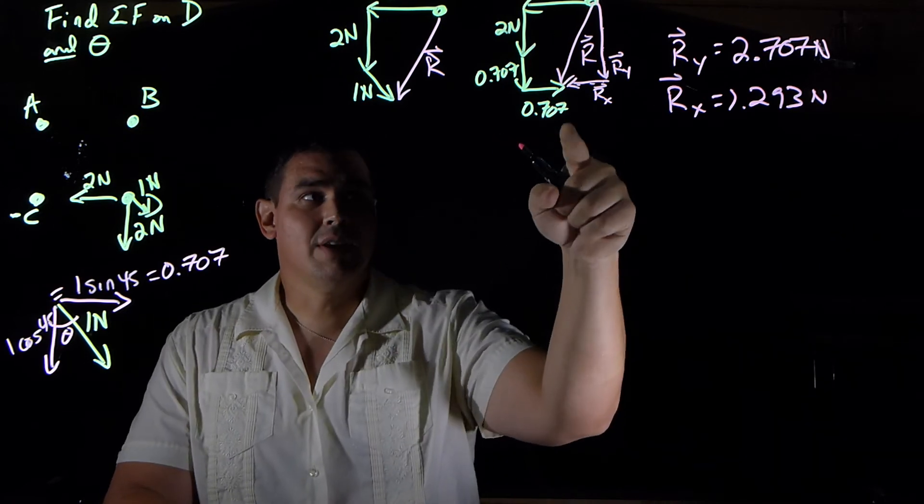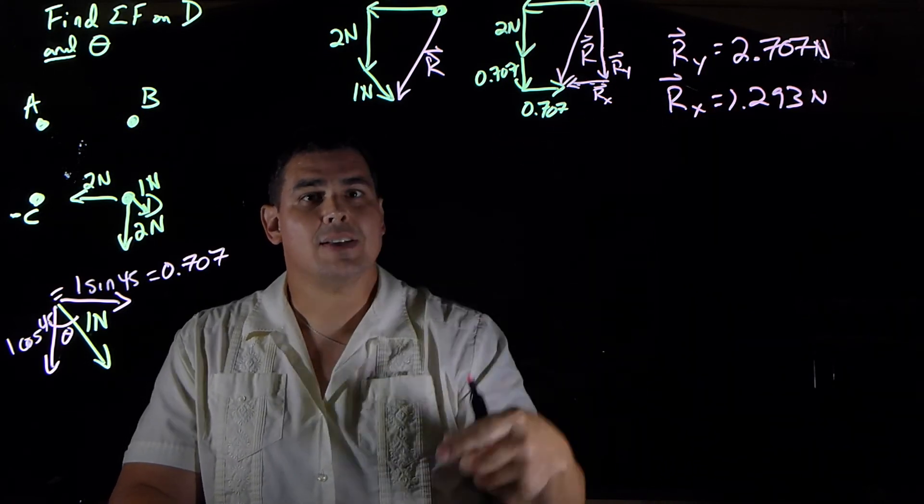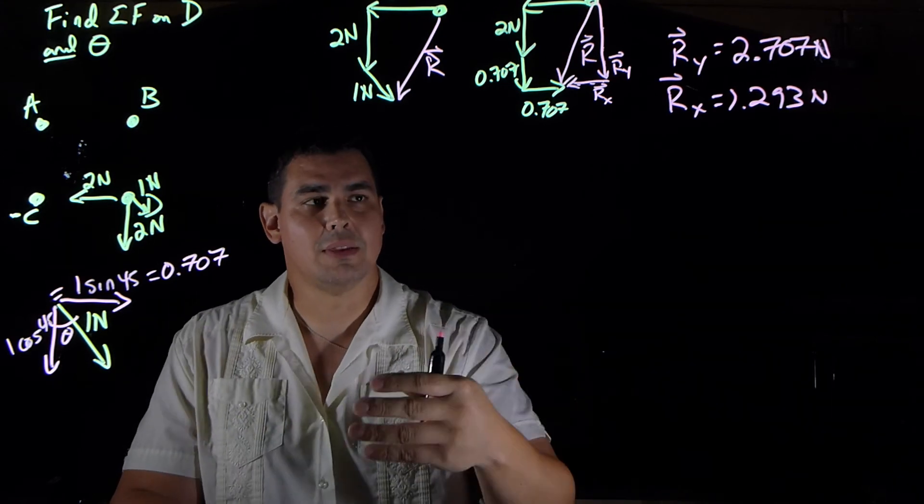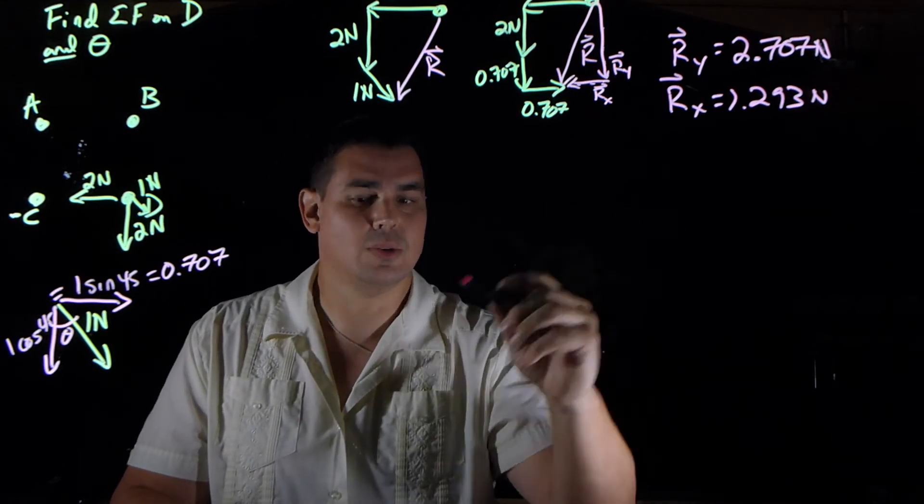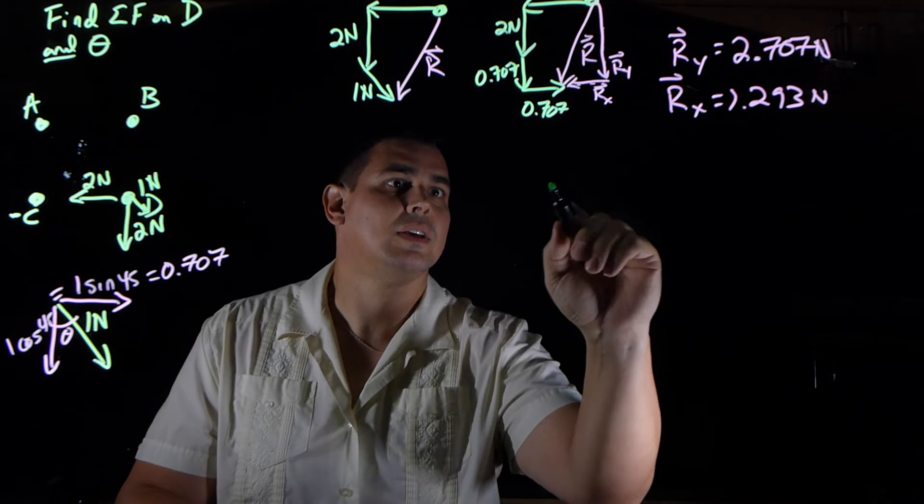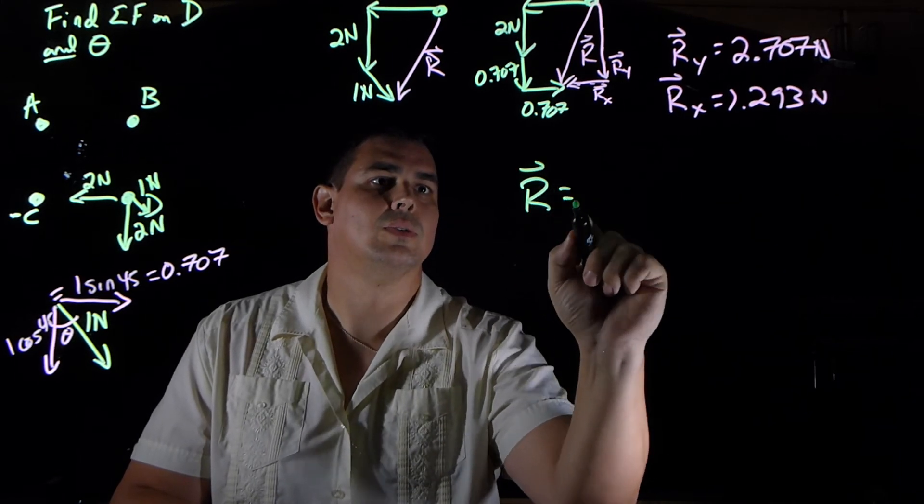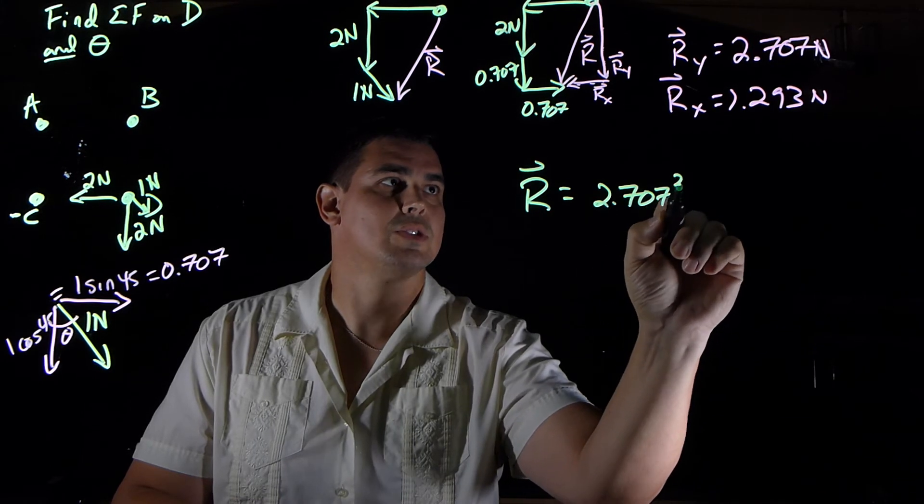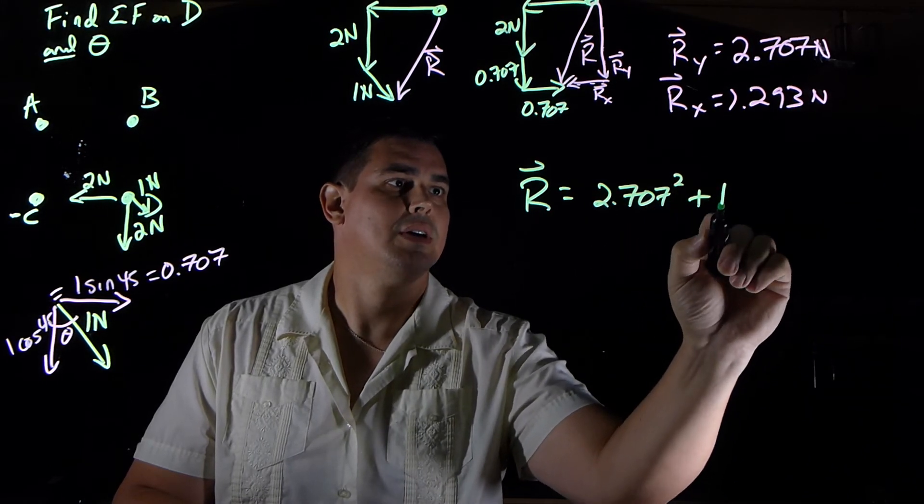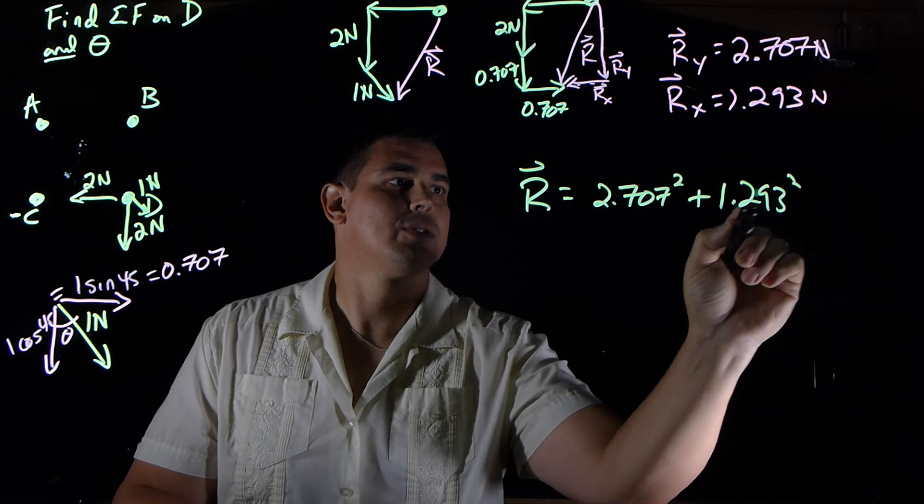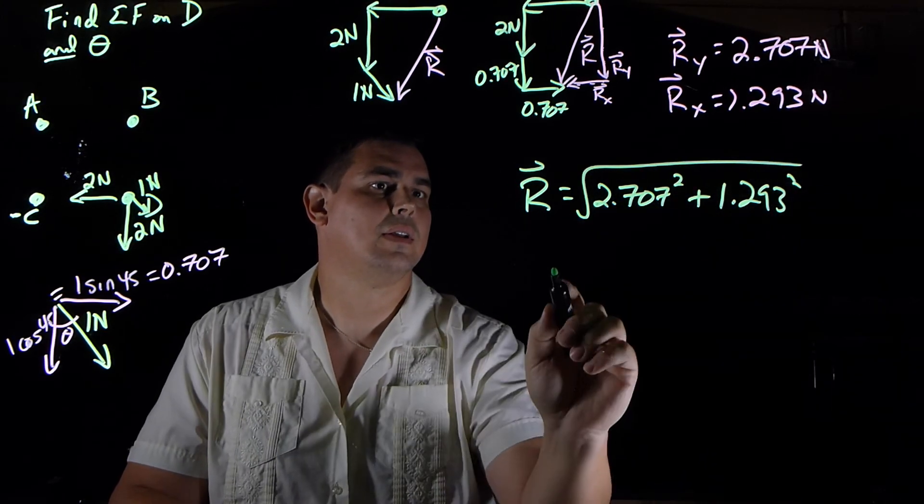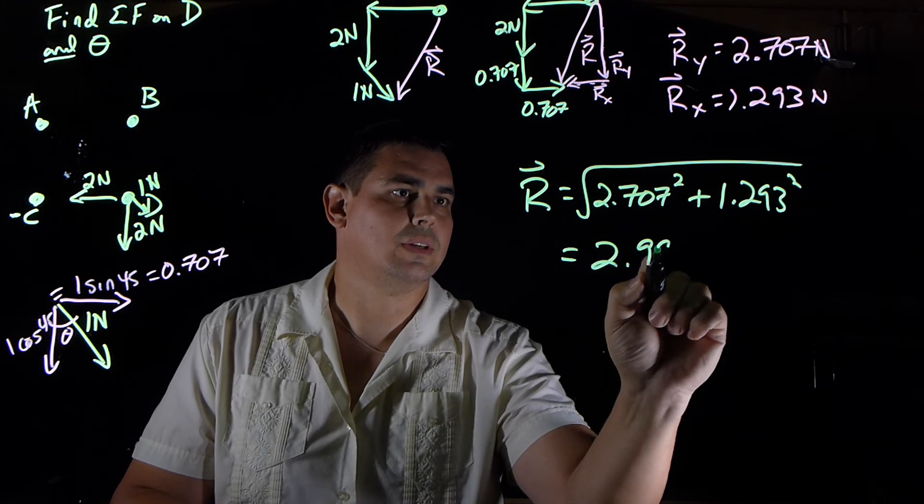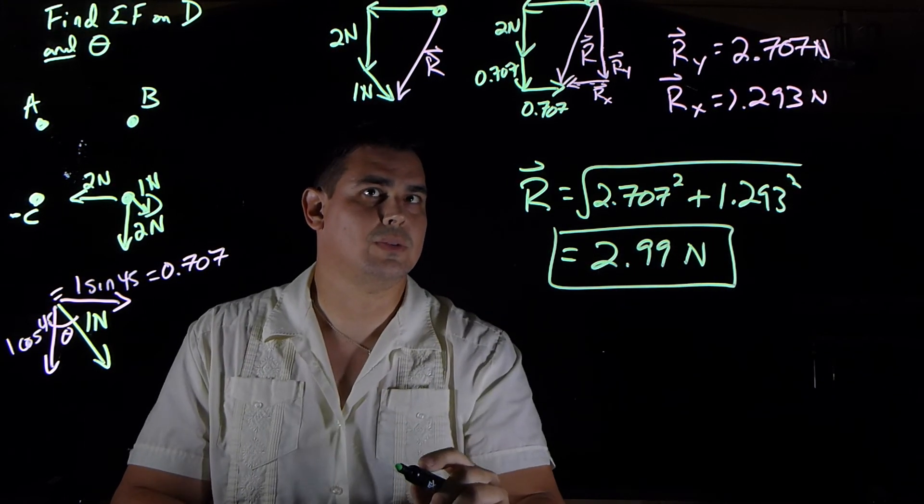So now that I've done that, I know my x and my y, so I can go back to the same thing. I can take those two, use Pythagorean theorem to get the magnitude of the resultant. So if I do that, the resultant is going to be the square root of 2.707 squared plus 1.293 squared. And that comes out to be 2.99. So it's about 3 newtons.